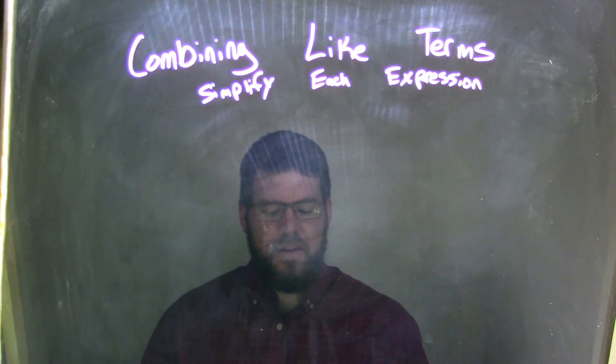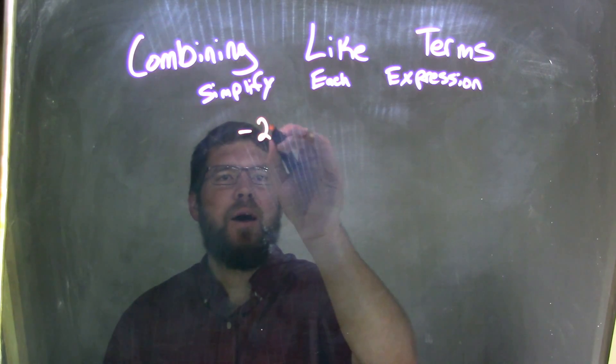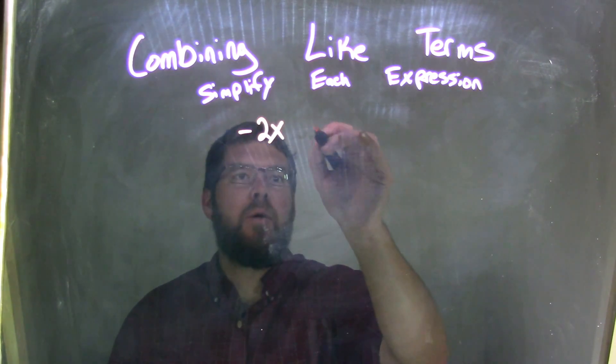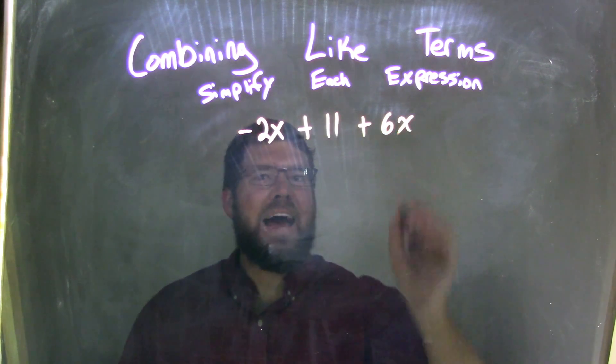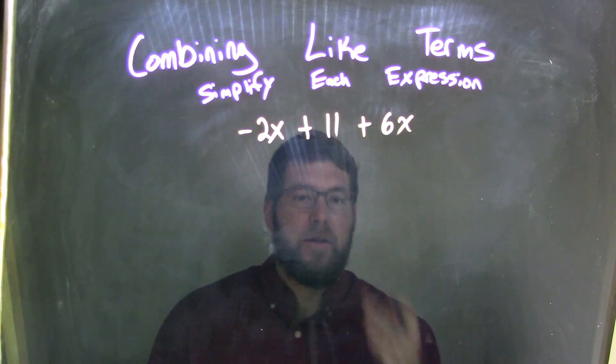So, if I was given this expression, negative 2x plus 11 plus 6x, so negative 2x plus 11 plus 6x.